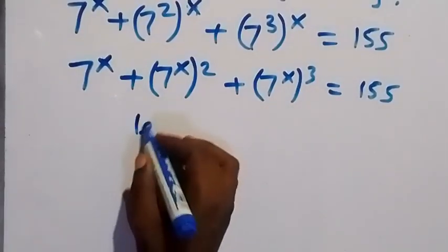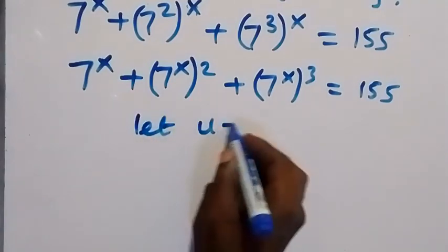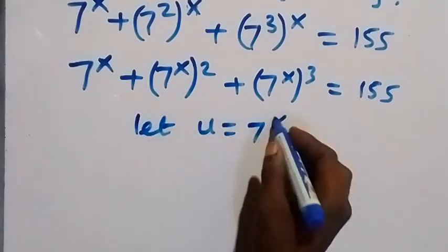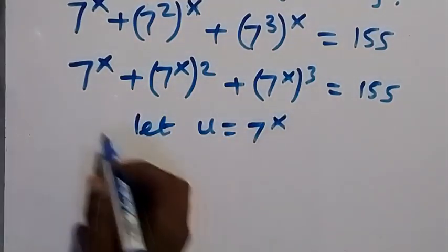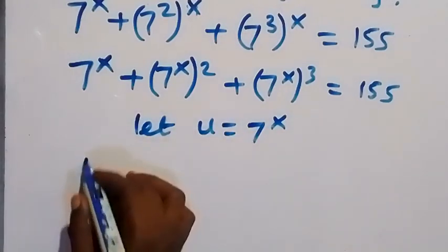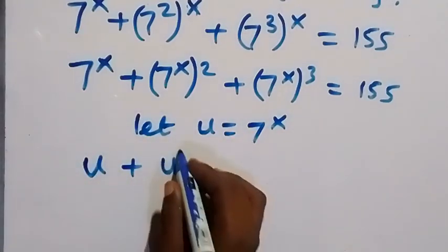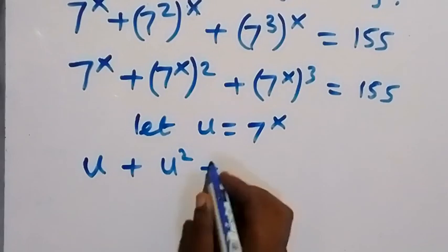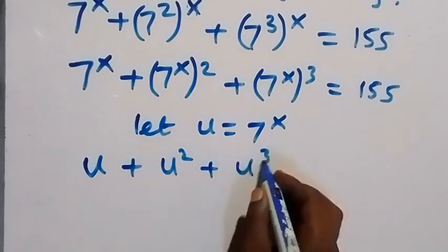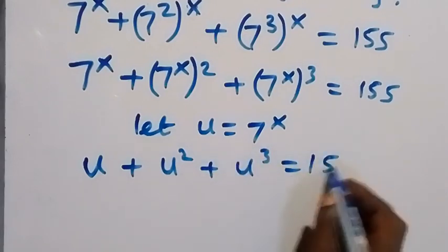Let's let u be equal to 7 to the power of x. Then we can write this again as u plus u squared plus u cubed, then equals to 155.